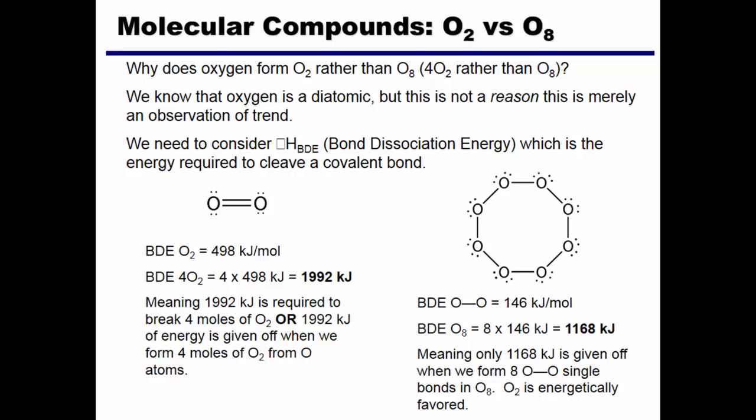So comparing potential molecular compounds, we know that O2 is the favorite form of oxygen rather than O8, but why?